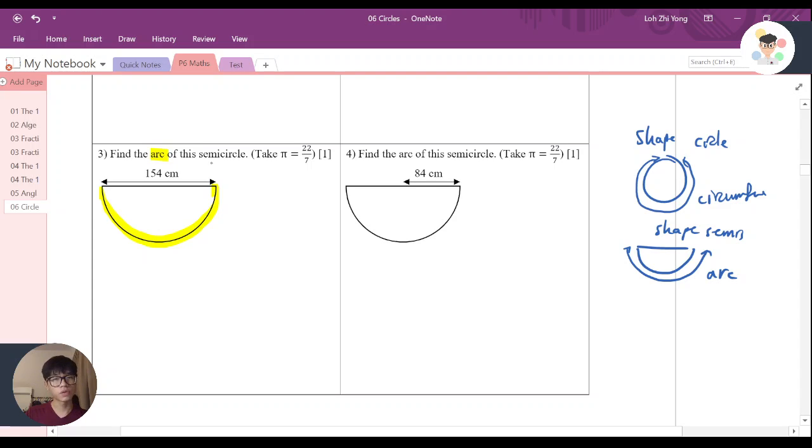Again, to look for the circumference, we know that usually it's 2πr, or sometimes we use πd, depending whether the question is giving us radius or diameter. And of course, in this case, we are given a diameter. So we can just use πd.